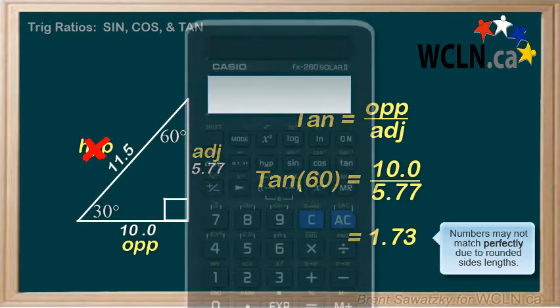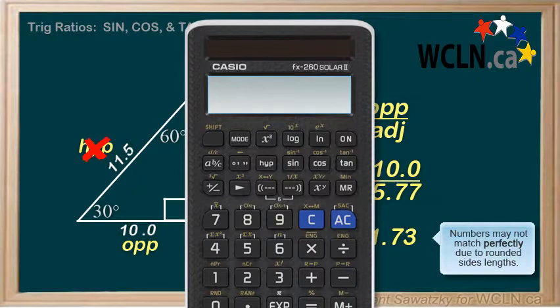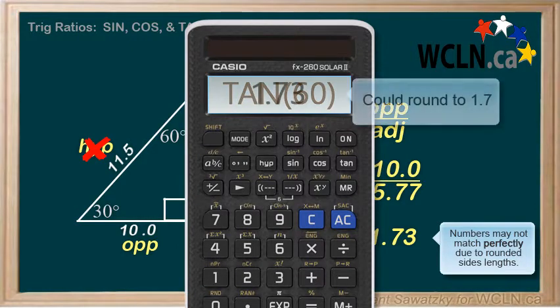With our calculator, we can also show that tan 60, or 60 then tan, comes out to 1.7.